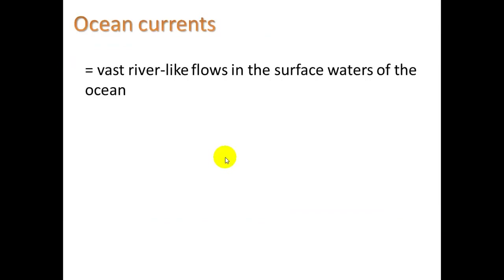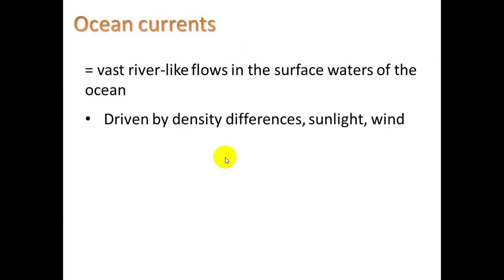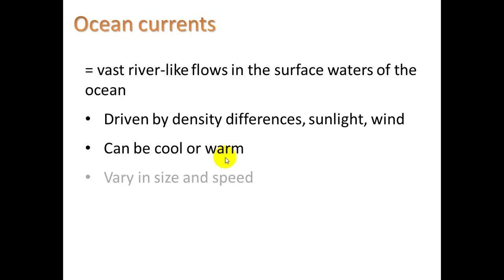Ocean currents are vast river-like flows in the surface waters of the ocean. They're driven by density differences, sunlight, and also wind. They can be cool or warm, they vary in size and speed, and they definitely influence climate. One thing we can see with that is the El Niño effect, which we'll talk about in a moment.